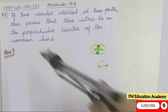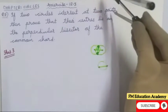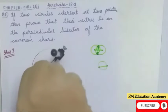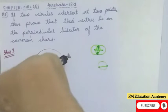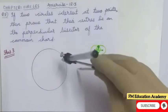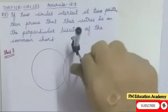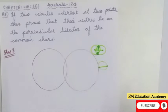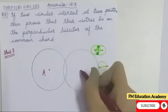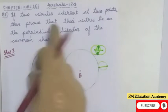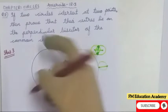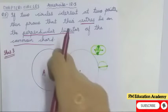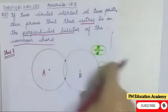Two circles are given because they meet at two points. Let the center of one circle be A and the center of the other circle be B. They meet at two points. I have to prove that these centers lie on the perpendicular bisector of the common cord — the cord common to both circles. Let us join those two points to form the common cord.